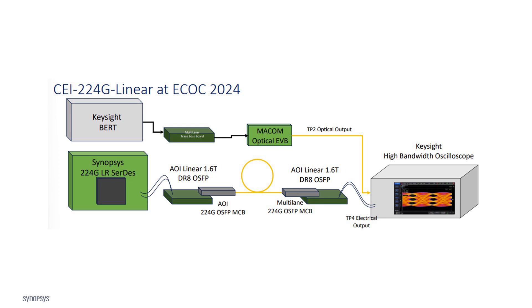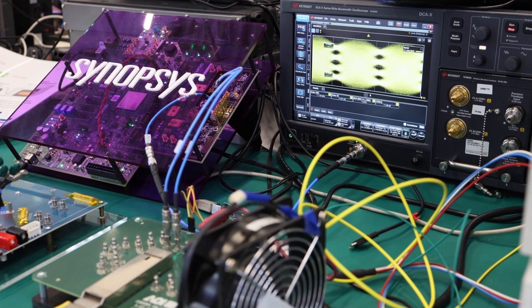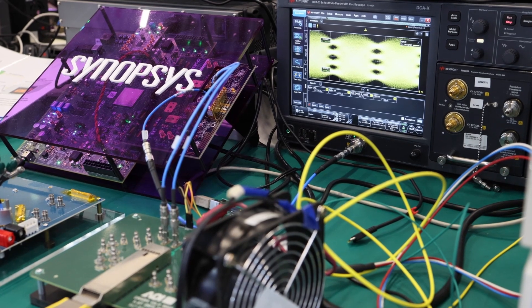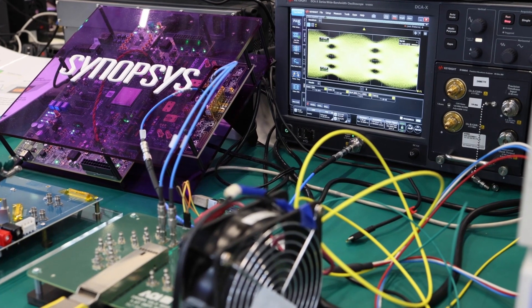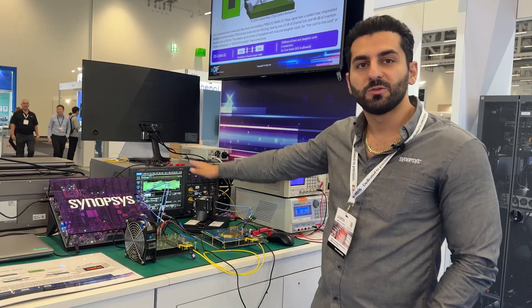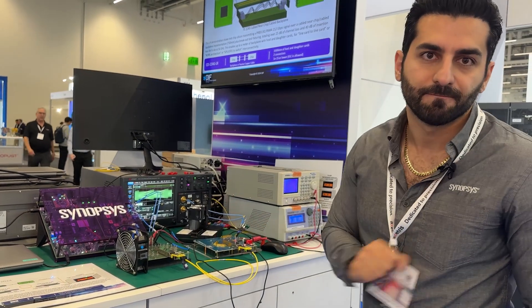Basically to reduce power consumption, the retimer has been taken away. We are going through some optical cables to another linear pluggable module — no retimer in this one — to MCB. We are showing the performance of the eye at the output of a TIA, Transimpedance Amplifier, at the scope of an OIF link partner. So you can see the open eye here — 224 gig with the LTO link. Thank you very much.